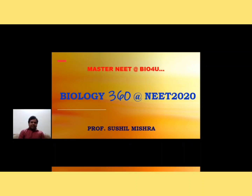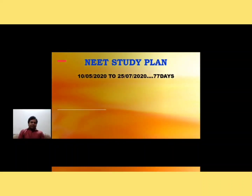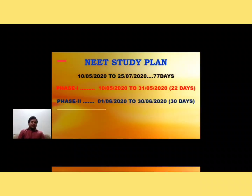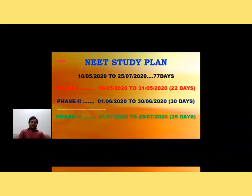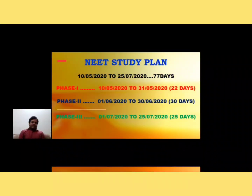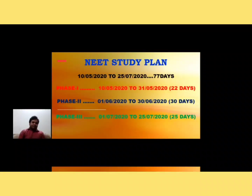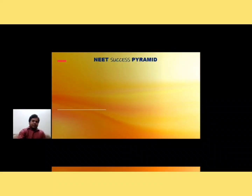For a perfect 360, what is your study plan? We have roughly around 77 days — from 10th of May to 25th of July. I have divided these 77 days into three phases: Phase 1 is 10th May to 31st May (22 days), Phase 2 is 1st June to 30th June (30 days), and Phase 3 is 1st July to 25th July (25 days). In this video I will give you planning for Phase 1.